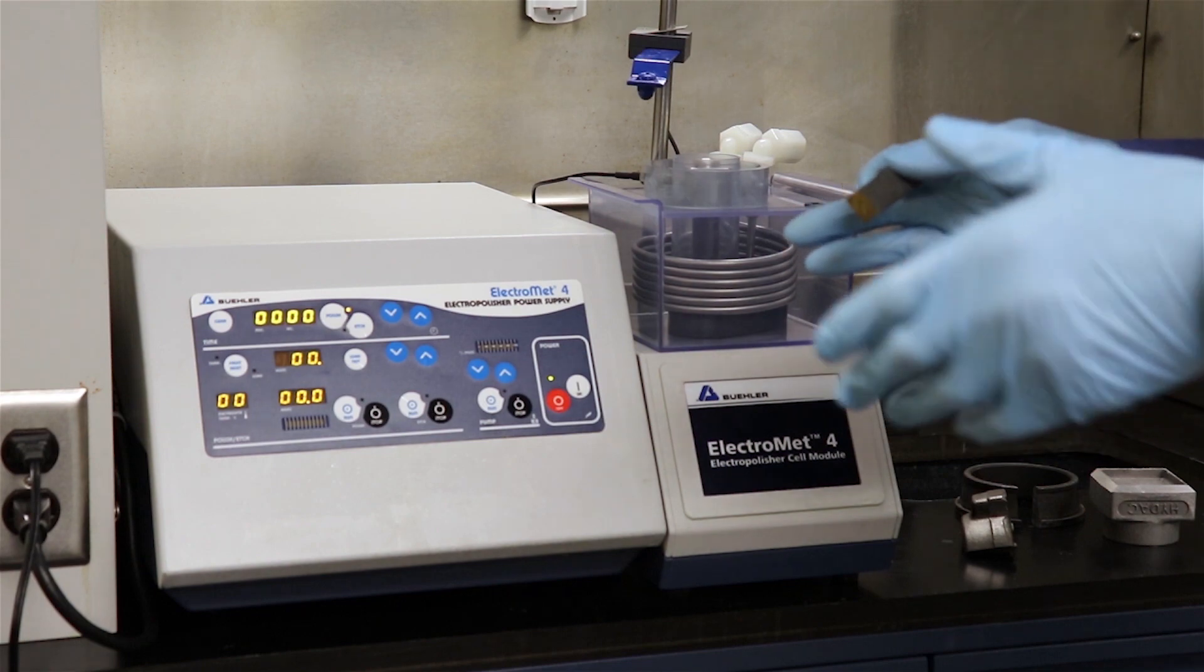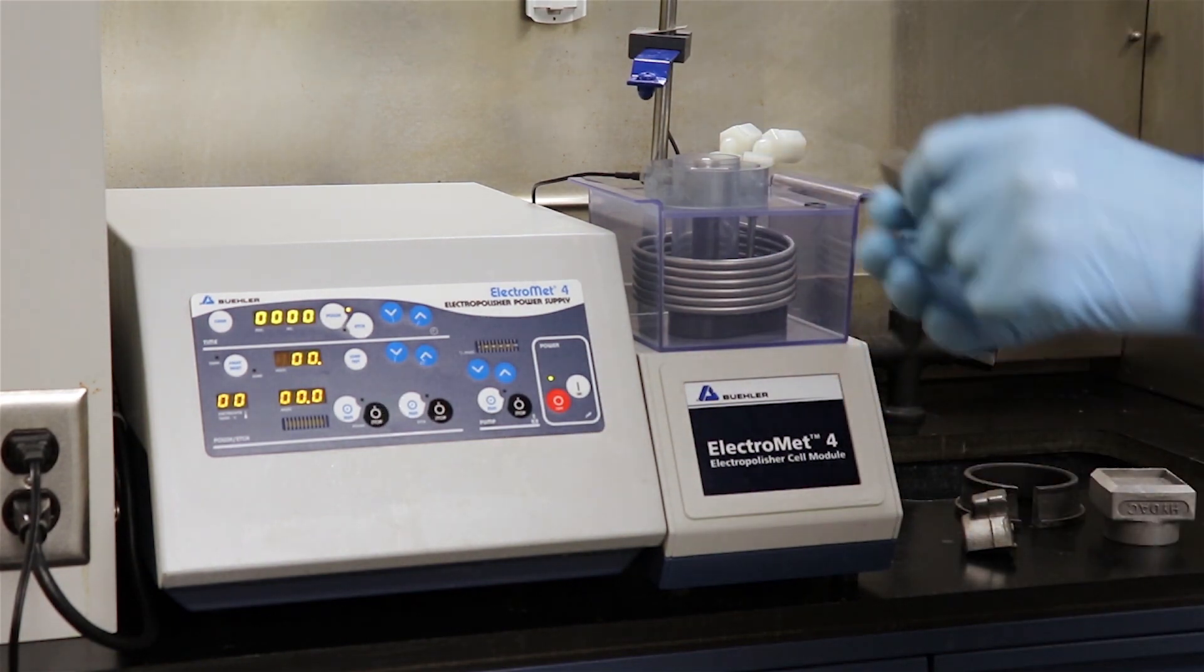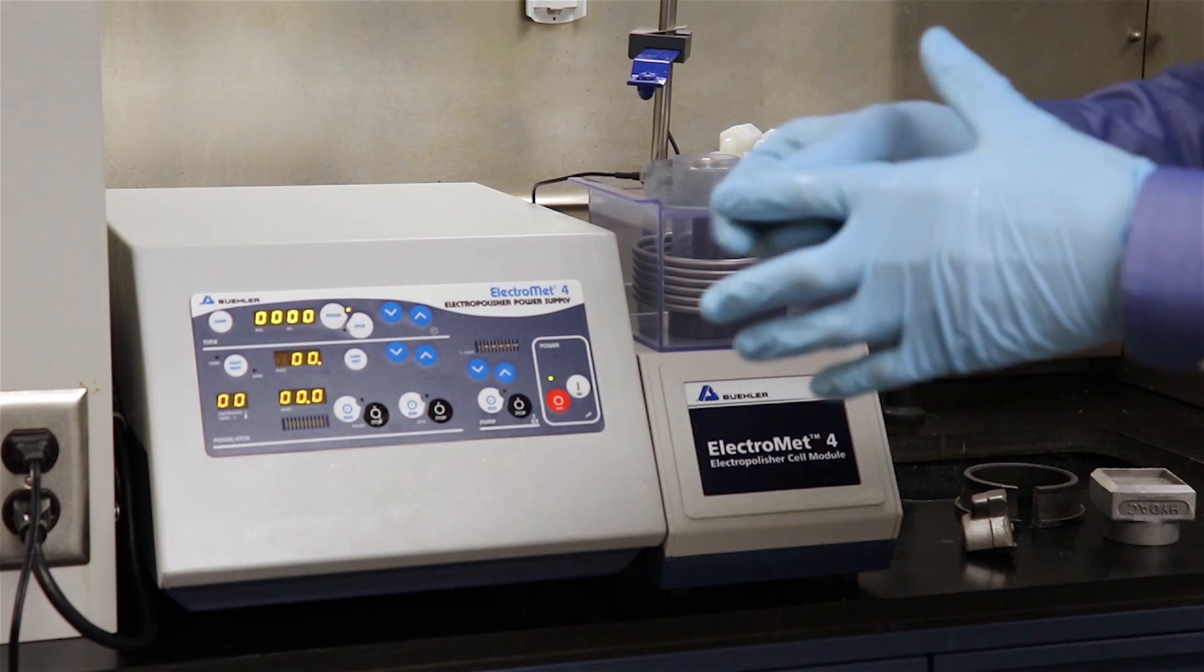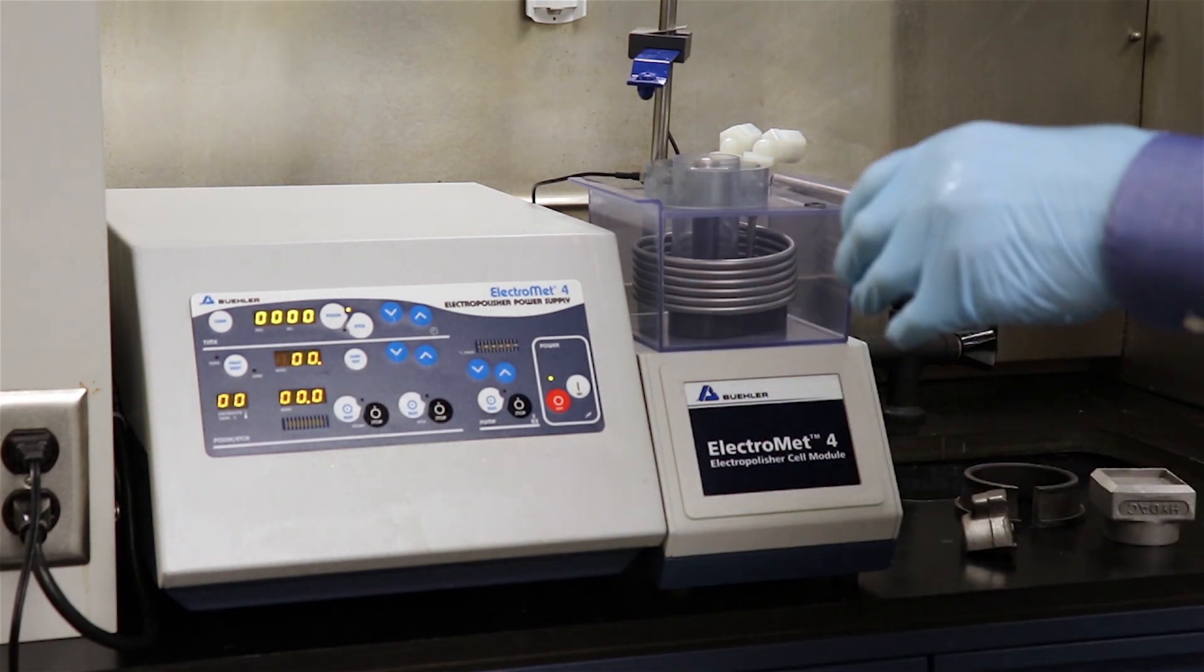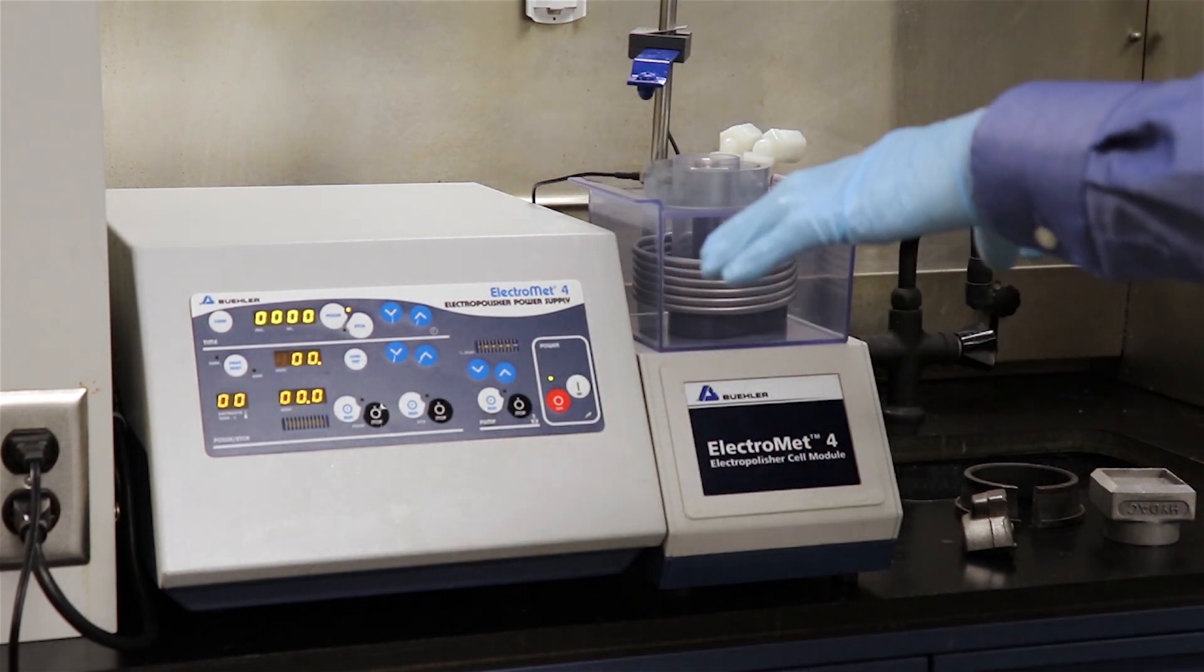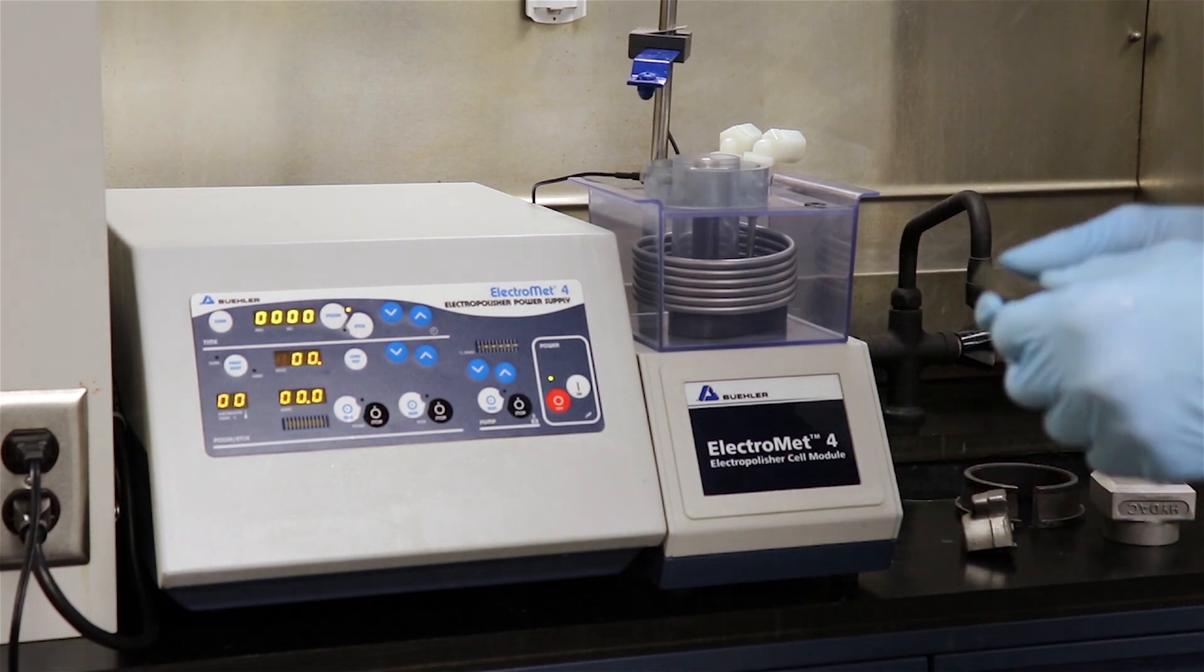Why would you want to electropolish versus mechanical polishing with a traditional grinder and polisher where you would grind a sample with silicon carbide paper and diamond abrasive? Electropolishing where it applies can really save a lot of time relative to traditional mechanical preparation.